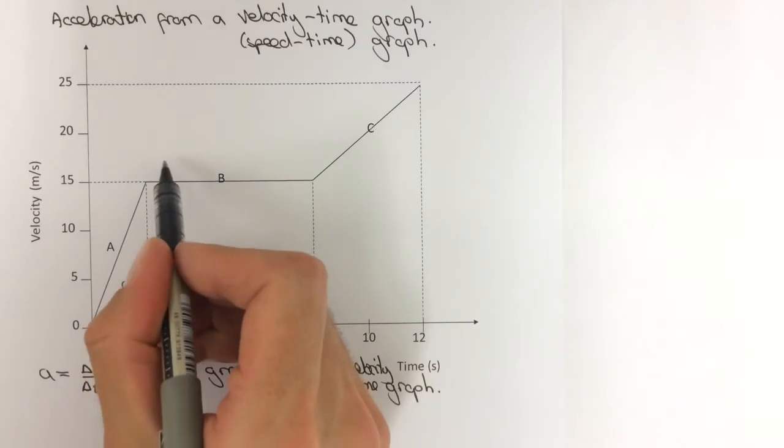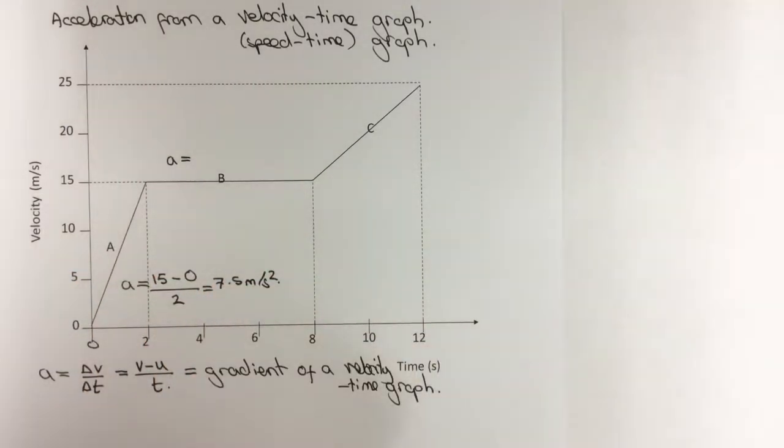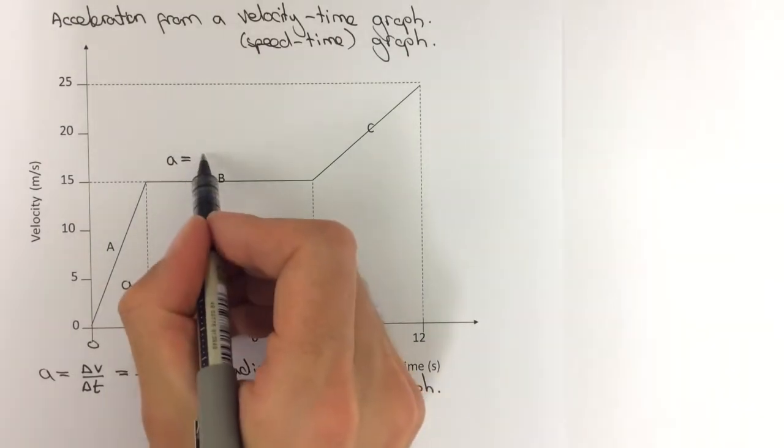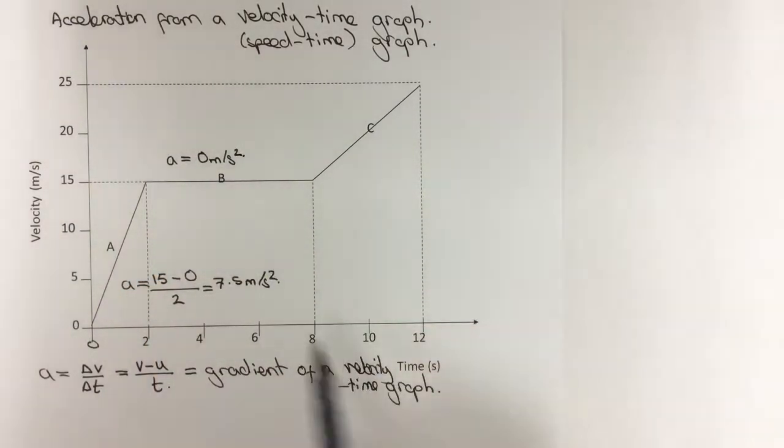Now in section B, the speed or velocity is not changing, and therefore we can say the acceleration is 0 without doing a calculation. Equally we can see the gradient is 0 because it's a horizontal line.